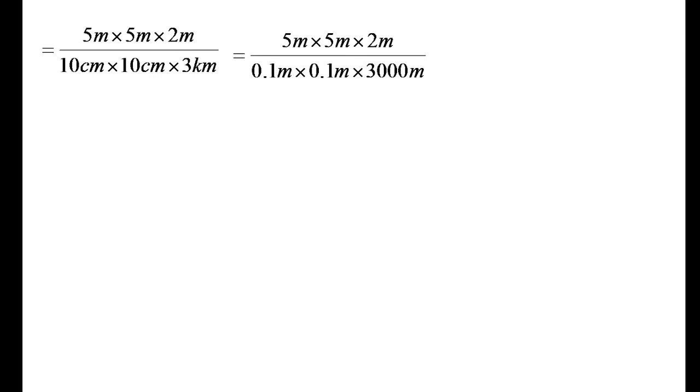After converting and simplifying: the numerator is 5 × 5 × 2 = 50. In the denominator, 0.1m × 0.1m × 3000m = 30.